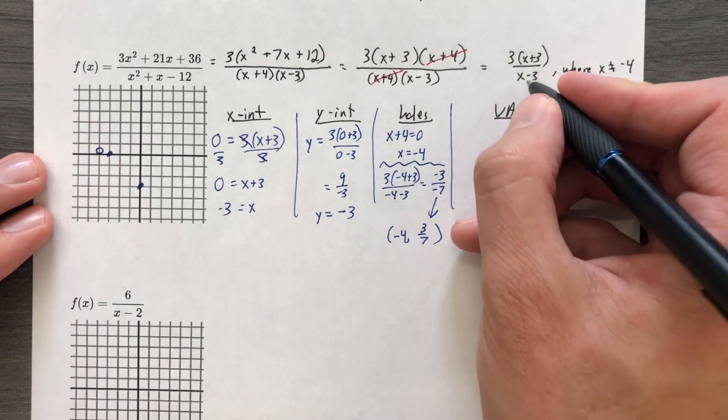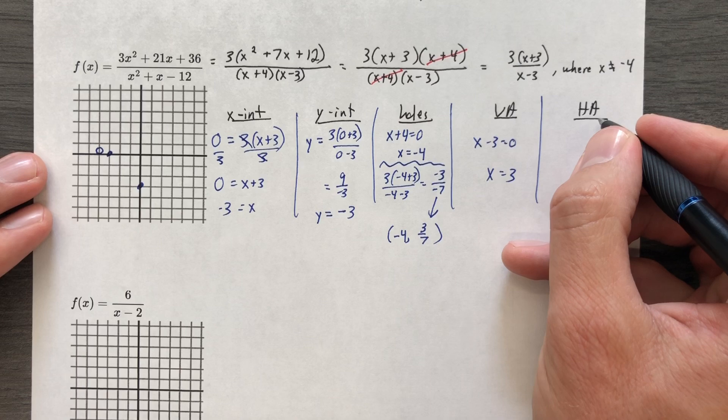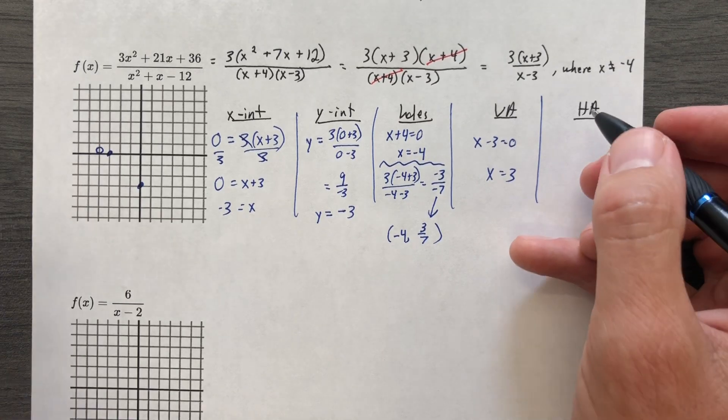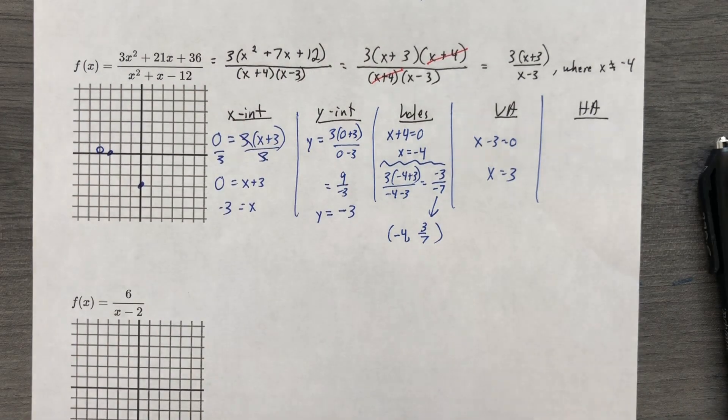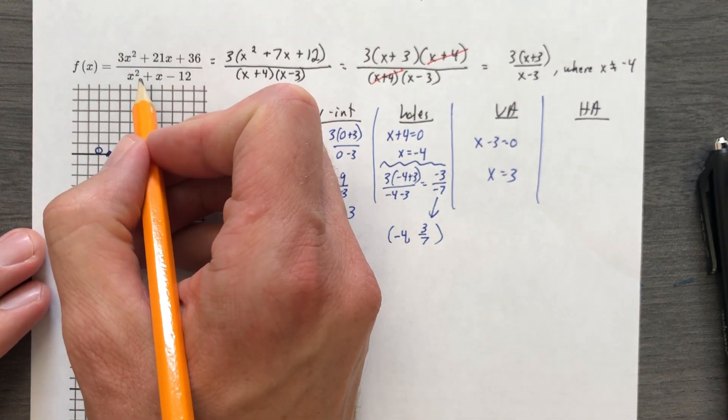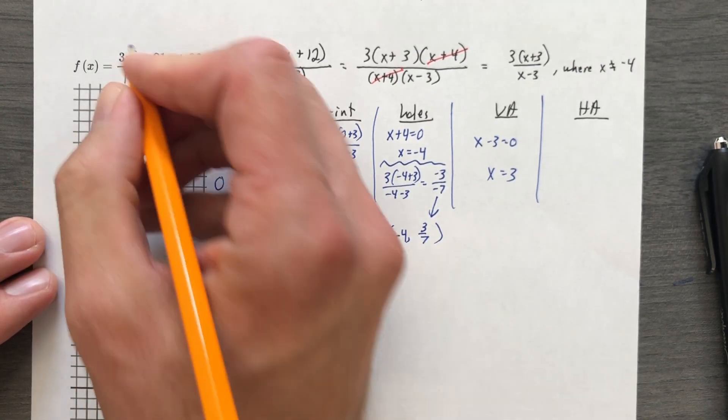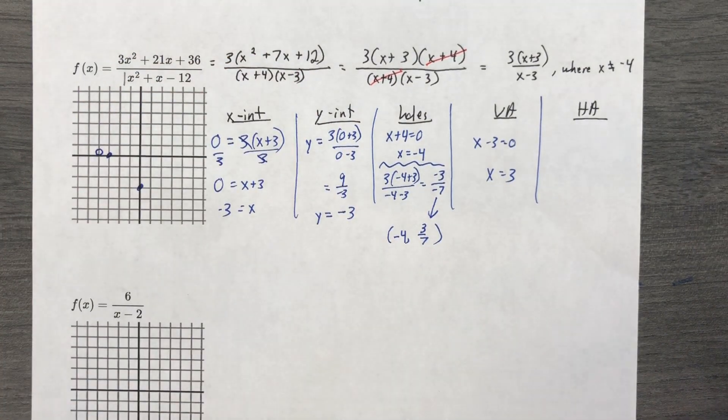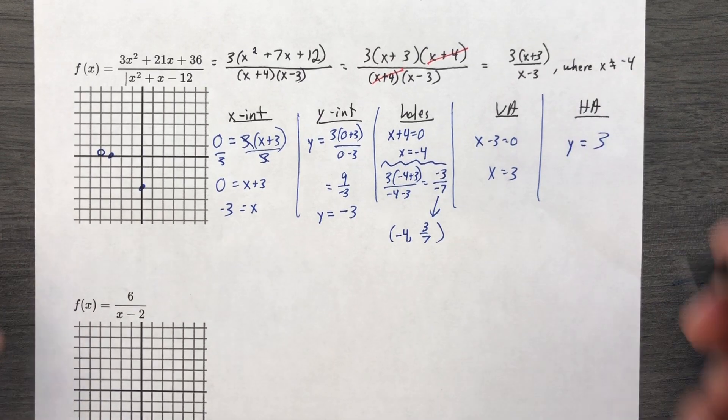The vertical asymptote is where your denominator equals 0. The horizontal asymptote is, and we can actually go all the way back to the beginning. Do the numerator and denominator have the same degree? The numerator has a degree of 2. The denominator has a degree of 2. What's 3 divided by 1? 3. It is a horizontal line. Y equals 3.